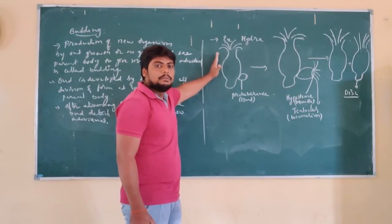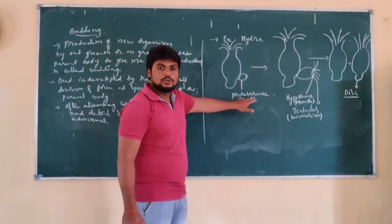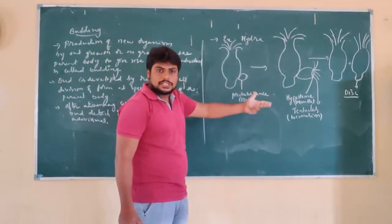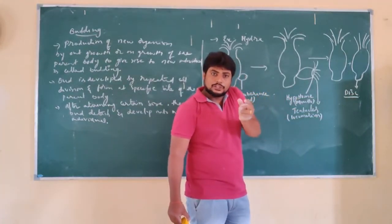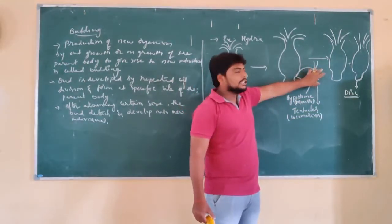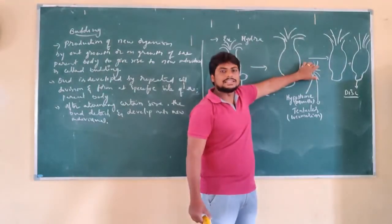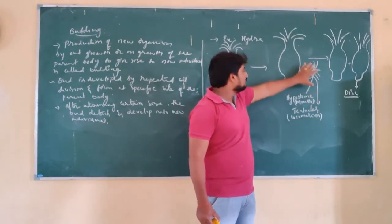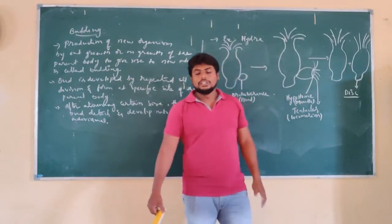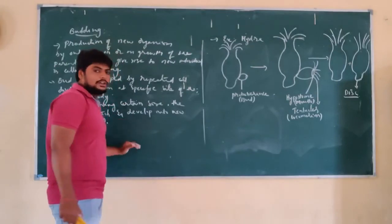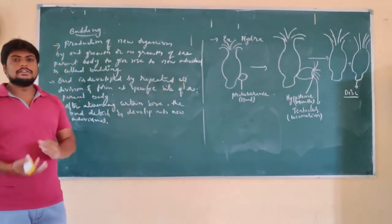This can be observed in case of Hydra. Hydra is a simple multicellular organism where at a specific site it develops a small bud, what we call as protuberance. These protuberances develop, and after reaching a certain size they grow into a new individual. The free side of this bud consists of a mouth part called as hypostome, and on the surface of the mouth it is consisting of tentacles that help in locomotion. After reaching a certain size, the protuberance detaches from the parent body and develops into a new individual. That is what we see — budding is one of the methods of asexual reproduction of a simple multicellular organism.